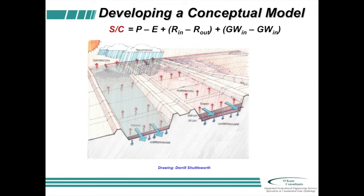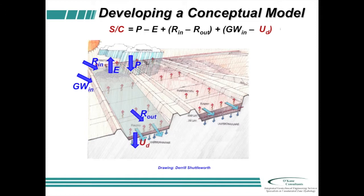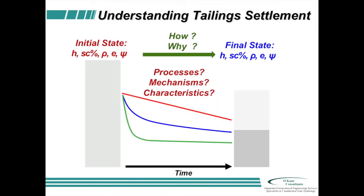Rather than saying groundwater out, I'll say underdrainage. So I can have some precipitation, some runoff in, runoff and groundwater in, some evaporation, some runoff, and some underdrainage. The idea is how does my solids content change? If I'm smart, I can eliminate the run-on and groundwater in to take advantage of evaporation — I can spend a little money manipulating it, or at minimum, make sure you understand the influence of it.